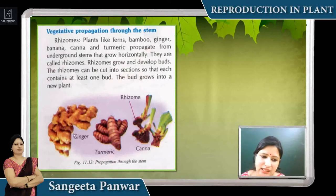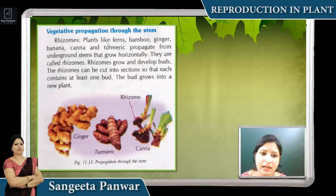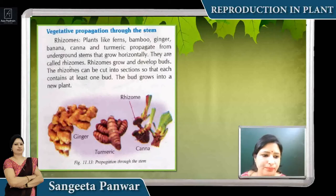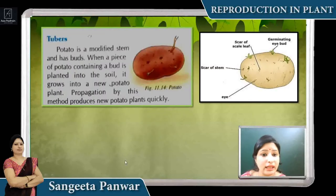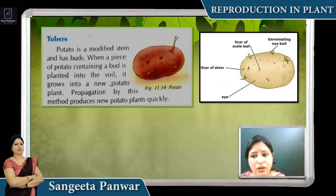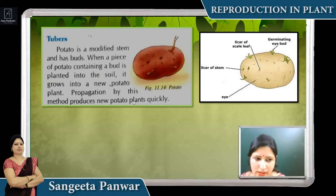Some plants' stems are underground. We can detach them from any part and grow a new plant — this is called vegetative propagation through the stem. Like ferns, bamboo, ginger, banana, and turmeric — they all are underground stems that grow horizontally in the earth's surface. These are called rhizomes, and they grow from buds. If we cut each bud and grow new plants, it is like a tuberous form. In the potato, eye-like structures grow; if we cut them and place them in soil, they grow into new plants. This is the capacity of the stem to develop a new plant.